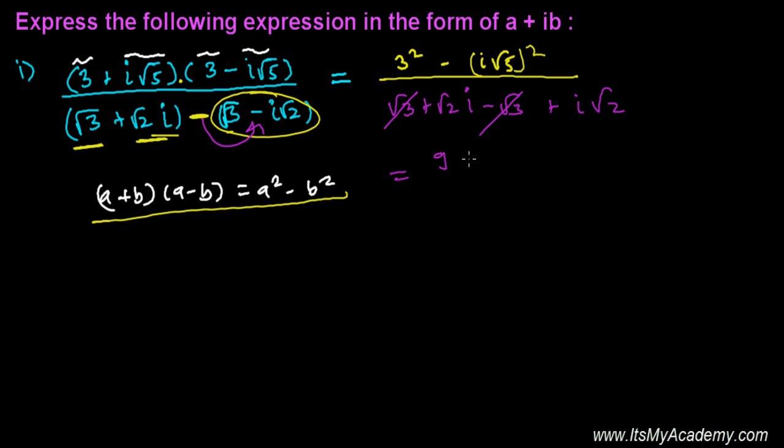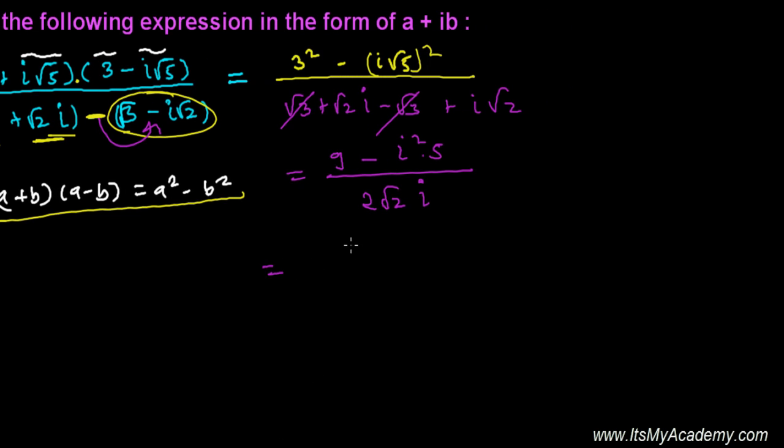Divided by √2i times √2i - that's 2√2i. Now, the next step: it's 9, and i² is -5. In place of i², you can write -1, and that -1 will multiply this minus, so it becomes +5, divided by 2√2i. Now, 9 + 5 is 14, divided by 2√2i.